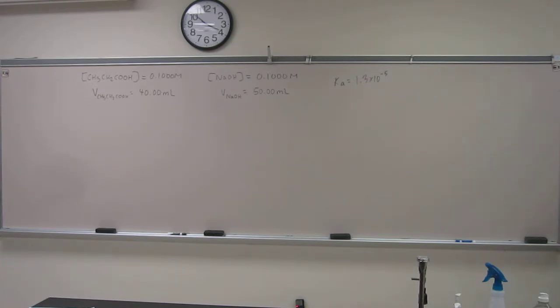So we'll just reread it. It says calculate the pH during the titration of 40 mL of 0.100 molar propanoic acid, Ka 1.3 times 10 to the negative 5, after the following volume, 50 mL of 0.100 molar NaOH has been added.